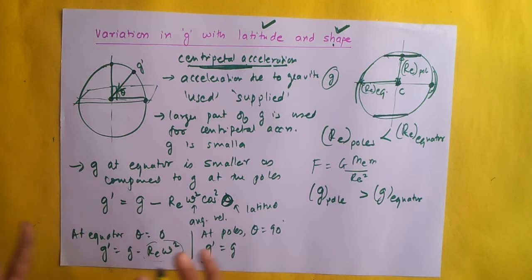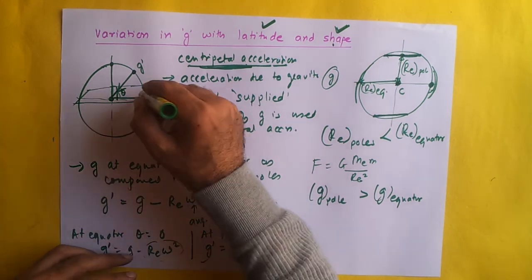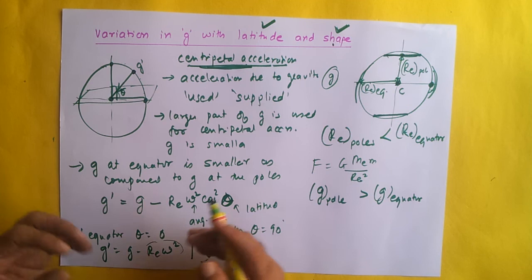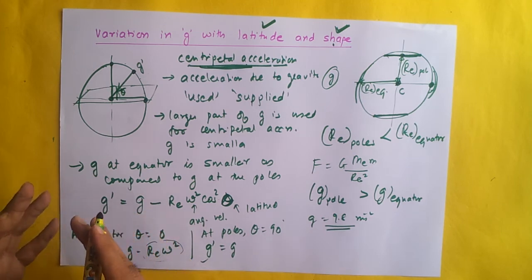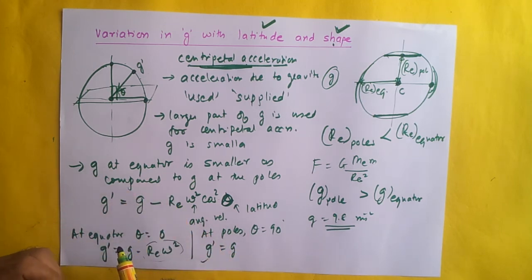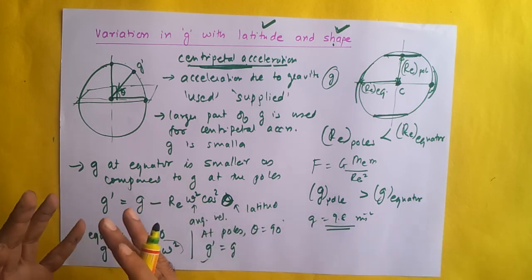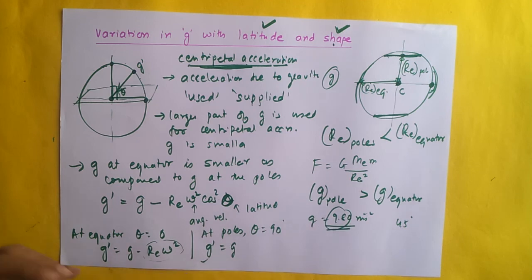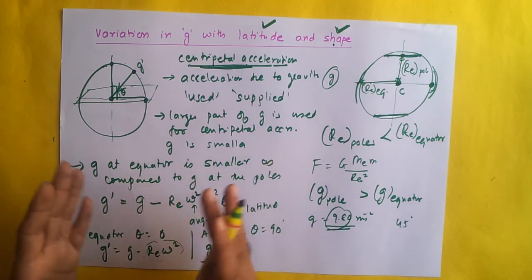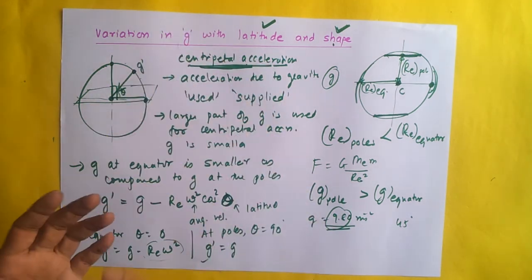With this we have completed our discussion on variation of G with latitude, shape, height, and depth. One question that may arise is: if the value of G changes from point to point on earth, how do we take the value of G as 9.8 m/s²? What is done is that as G changes from place to place, we go for a standard fixed value at sea level taken at a latitude of 45 degrees — at 45 degrees latitude the value of G is 9.80 m/s², which is taken as the standard value for all calculations.